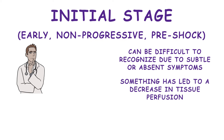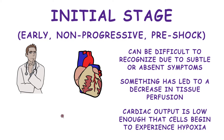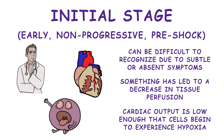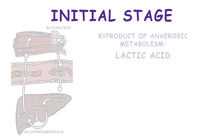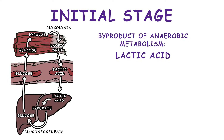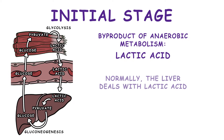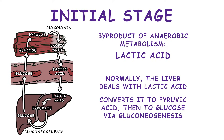Something has led to a decrease in tissue perfusion. Cardiac output is low enough that cells begin to experience hypoxia. If tissues receive insufficient oxygen and nutrients, they switch from aerobic metabolism, which uses oxygen, to anaerobic metabolism, which does not use oxygen. Unfortunately, a byproduct of anaerobic metabolism is lactic acid. Normally, the liver deals with lactic acid, converting it to pyruvic acid and then to glucose via gluconeogenesis.